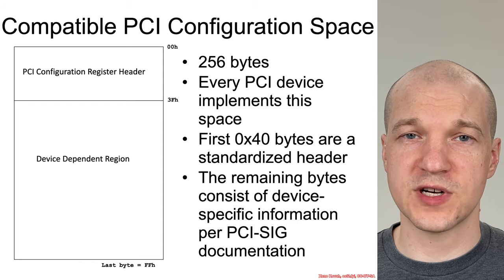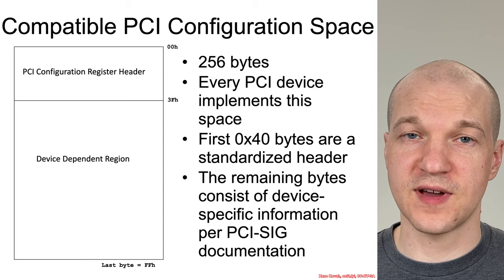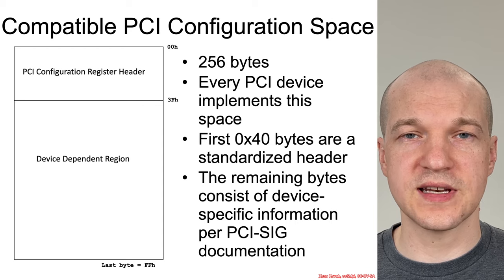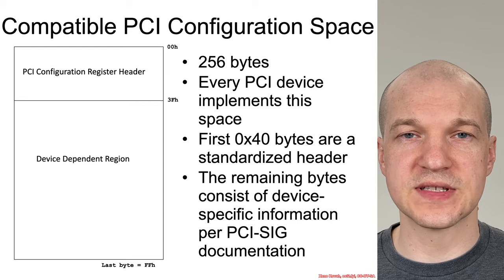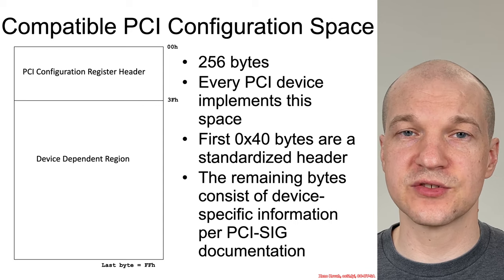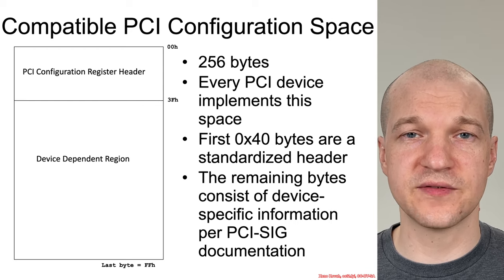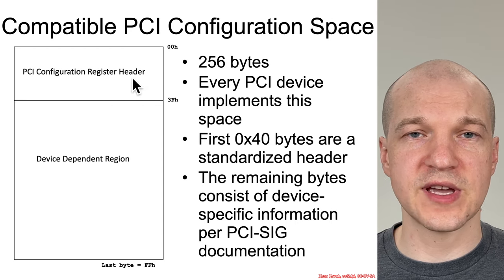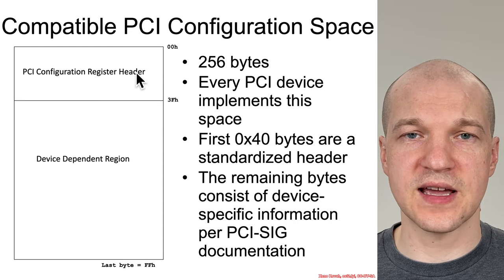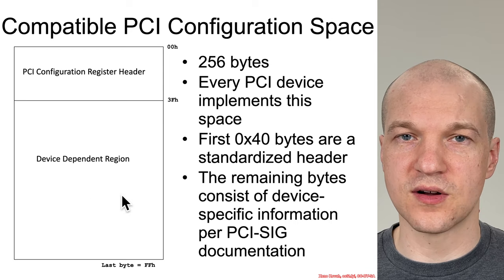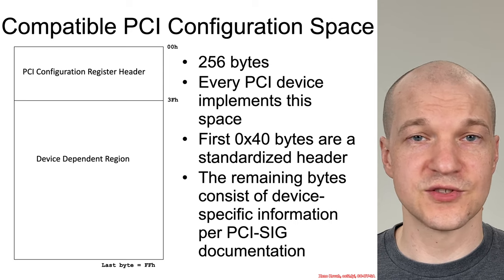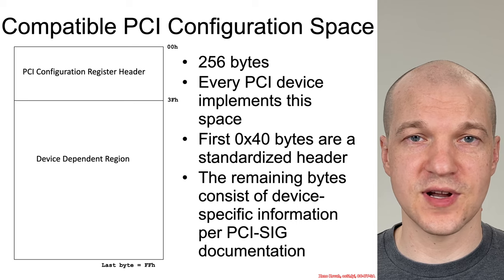Let's do a deeper dive on what exactly can be found inside the configuration address space. As already stated, it's 256 bytes and it is required, so every PCIe device must implement it. The first 40 bytes are going to be a standardized header, and the remaining bytes are all vendor-dependent information.